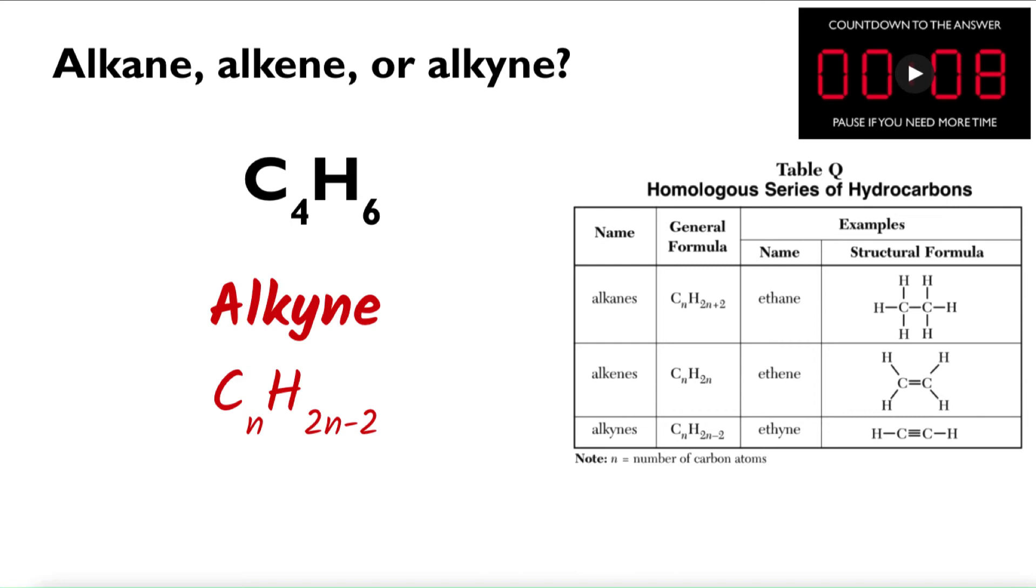It couldn't be an alkane because if it was an alkane, CnH2n plus 2. So the number of carbon atoms is 4. 4 times 2 is 8, plus 2 is 10. So it can't be an alkane. It can't be an alkene because 4 times 2 is 8. So alkyne, 4 times 2 is 8, minus 2 gives me 6. So that correctly fits into C4H6 because 2 times 4 minus 2 is 6.